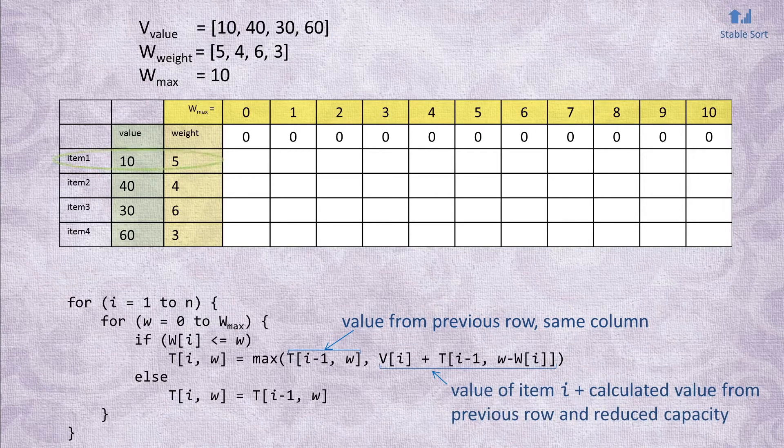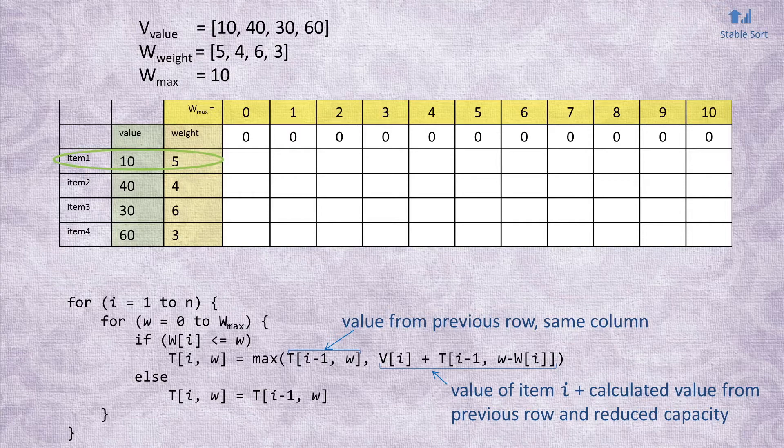Start at row with item 1, which has a weight of 5. It can't fit into a knapsack of capacity 0. So we fill this cell with the value from the row above, which is 0. It also can't fit if the capacity equals 1, 2, 3 or 4. So we keep copying the zeros from the row above.